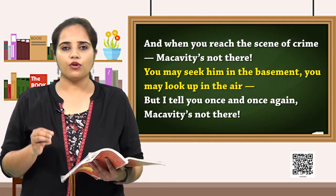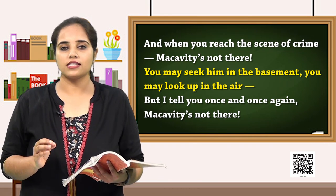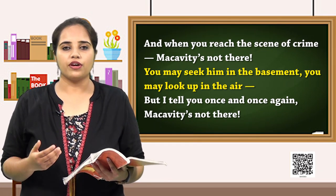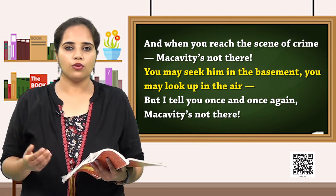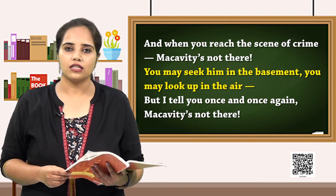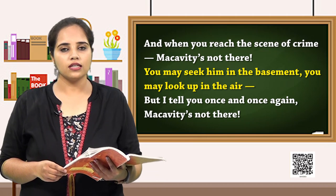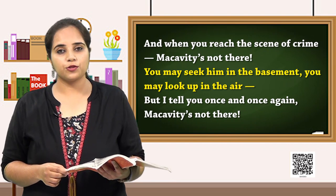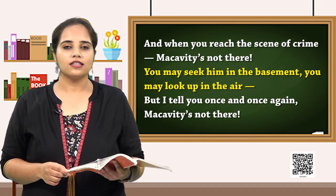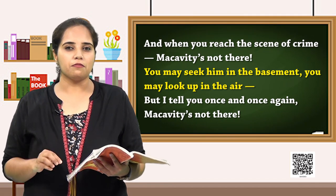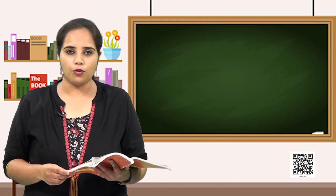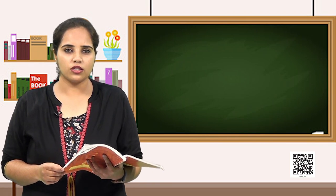The poet is again re-emphasizing to us that Macavity, wherever you go, wherever you see — either up above in the sky, or below, or beneath the earth — wherever you see, Macavity is missing. He is not to be seen anywhere. Now let's go to the third stanza of the poem. Read along with me and then see what is to unfold about Macavity.